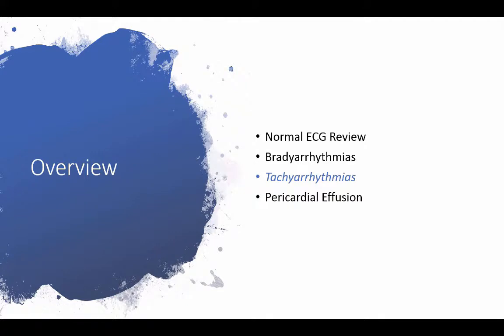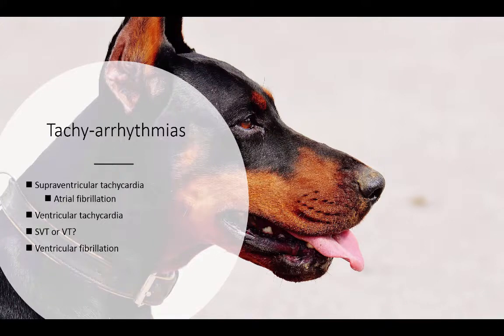Now we're going to move on and talk about tachyarrhythmias. The tachyarrhythmias we're going to cover are supraventricular tachycardia, particularly atrial fibrillation, which is a subset of supraventricular tachycardia, ventricular tachycardia, and how to differentiate supraventricular from ventricular tachycardia. Then we'll talk briefly about ventricular fibrillation at the end.